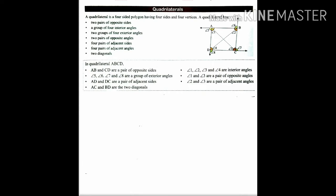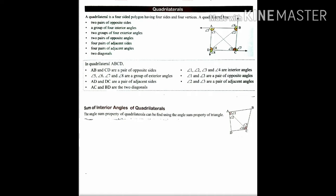BC and BD are the two diagonals. Now, regarding the sum of interior angles of a quadrilateral, the angle sum property of the quadrilateral can be found using the angle sum property of triangles. Given quadrilateral ABCD, we want to verify the angle sum property.